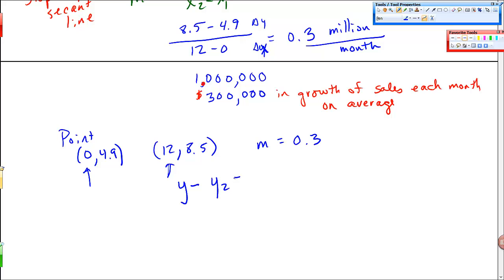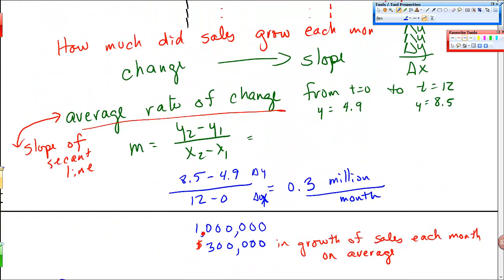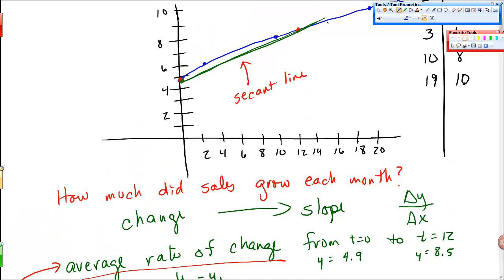Something like this. So I get y minus, let me use this, 8.5 and 12, equals 0.3 times x minus 12. And then you can solve for y, so this is 0.3x minus 12 times 3 tenths is 3.6, and then plus 8.5 from the left side. So I get a final line of 0.3x plus 4.9. And that's the equation of this green line that we drew up here that kind of closely approximates my original function.